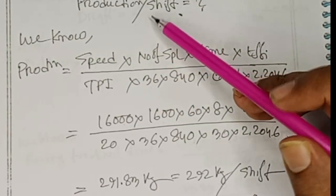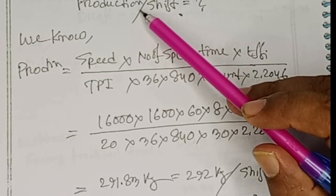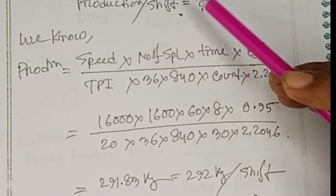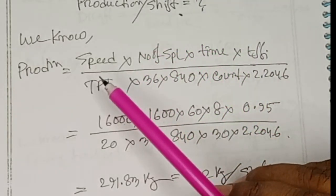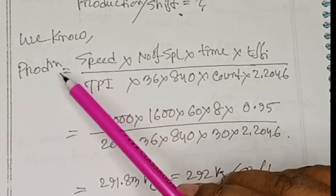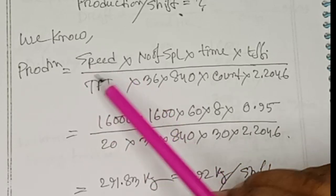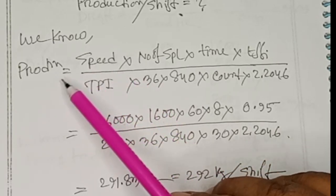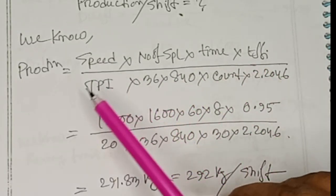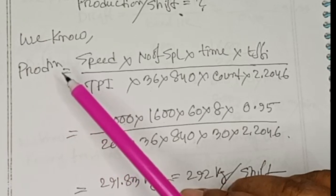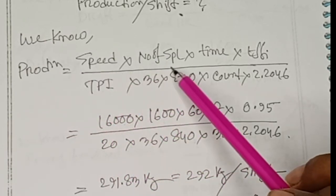am trying to convert production for a shift. We know that ring production calculation has a formula. So I'll include this formula for ring production calculation. Production calculation formula is speed into number of spindles times time times efficiency